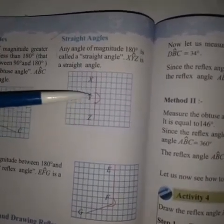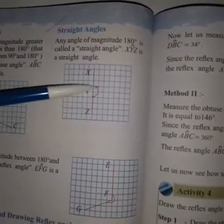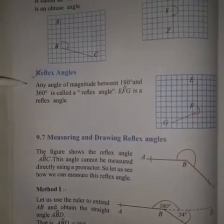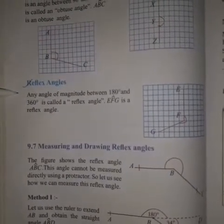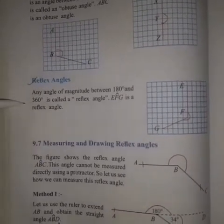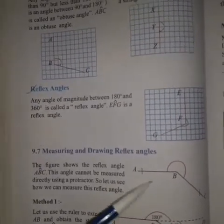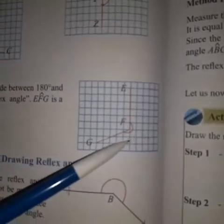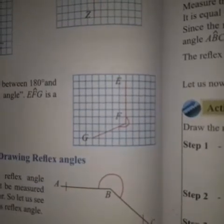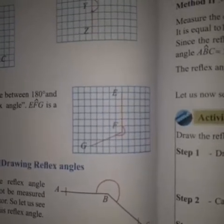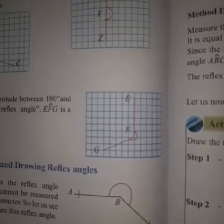You can see X, Y, Z — it's a straight angle. Reflex Angle: any angle of magnitude between 180 and 360 degrees is called a reflex angle. You can see EFG — it's a reflex angle. What is the value of it? More than 180 and less than 360 degrees.